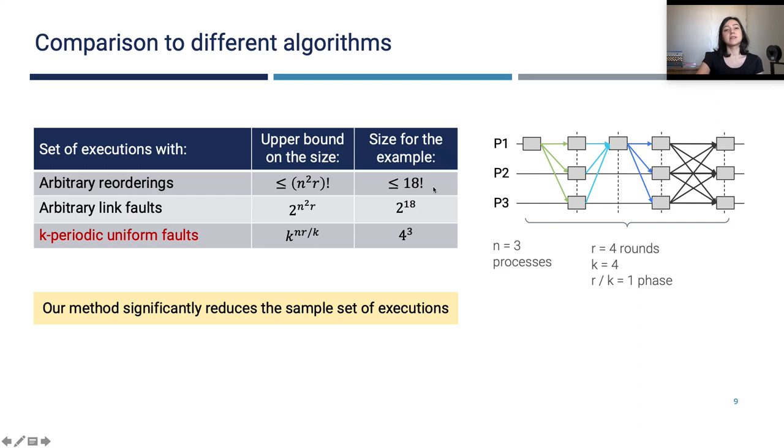You see the number of reorderings is huge. Of course, concretely for that example, this is smaller because there are some dependencies, some causal relations between the messages. But still, the sample set is very large. Now, let's consider an algorithm that samples from arbitrary link faults. In other words, it selects a subset of messages to be dropped and drops them. So we have N square R number of messages and a subset of these messages is still very large.